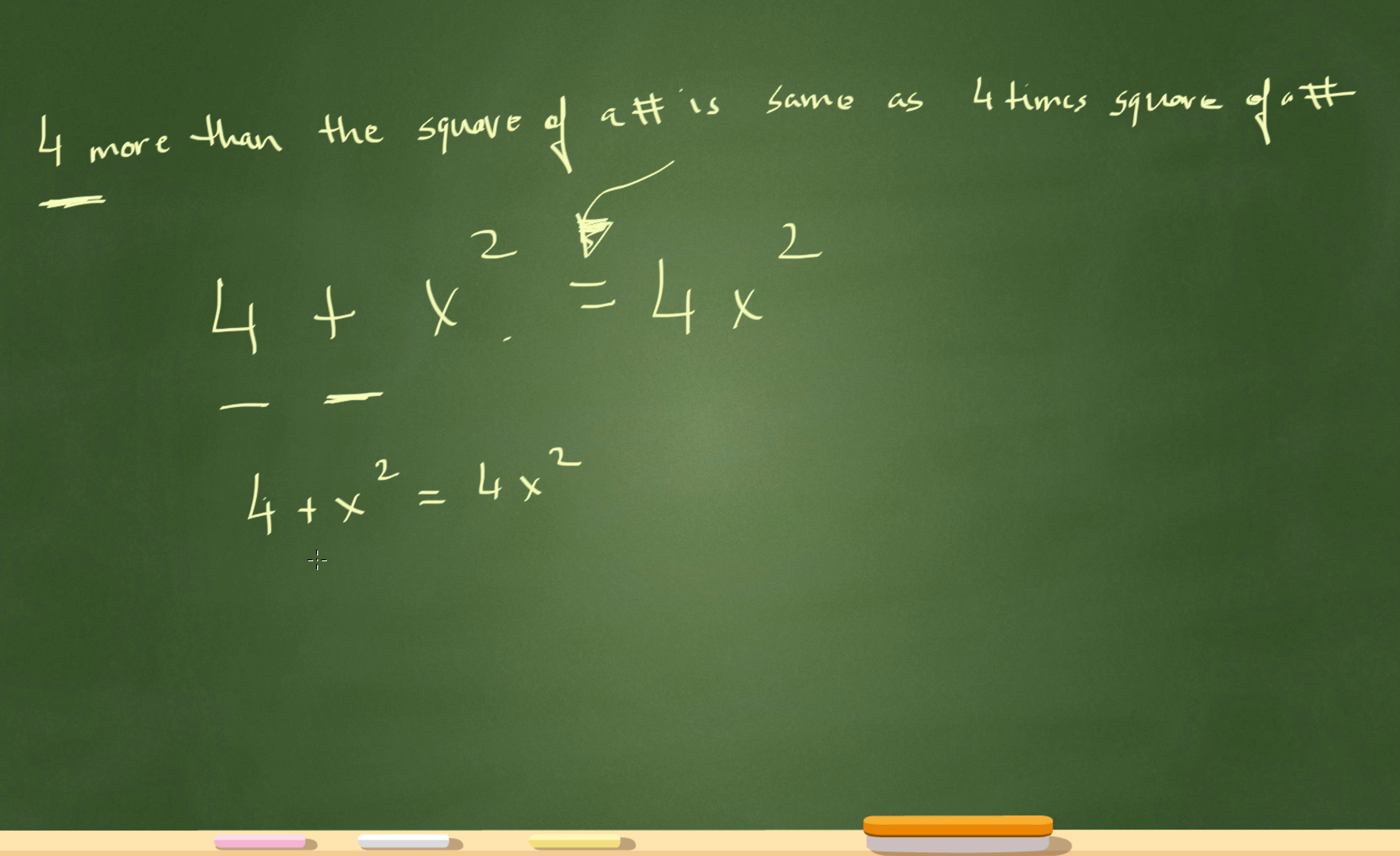And then, let's solve for it. Subtract x squared. I'm left with 4 equals 3x squared. And let's just bring this new equation on this side now: 4 equals 3x squared. Divide both sides by 3.